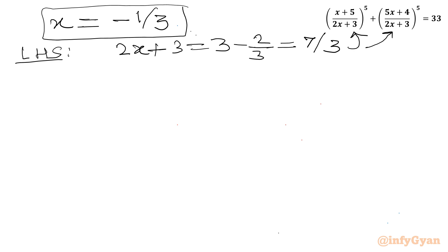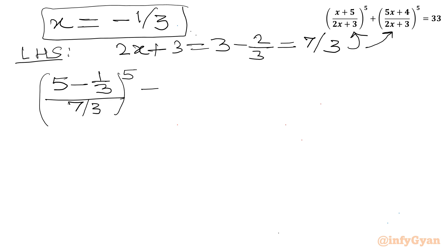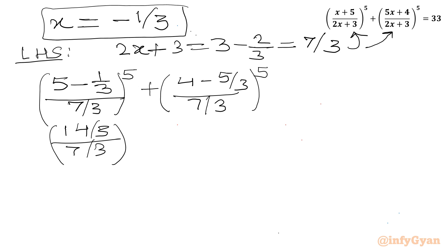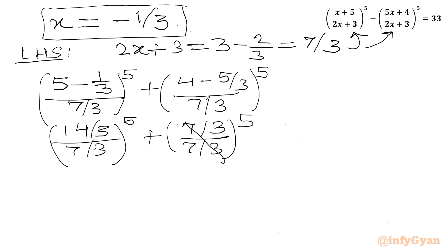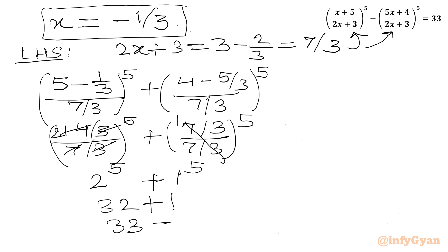Now checking x = -1/3: first compute 2x+3 = 3 - 2/3 = 7/3. LHS numerator of first bracket: x+5 = -1/3+5 = 14/3, so (14/3)/(7/3) = 2. Second bracket: 5x+4 = -5/3+4 = 7/3, so (7/3)/(7/3) = 1. Therefore LHS = 2⁵ + 1⁵ = 32 + 1 = 33 = RHS. Hence x = -1/3 is also verified.